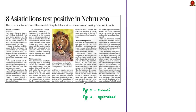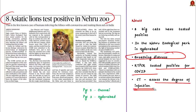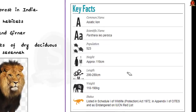The pandemic is also affecting Asiatic lions. About eight big cats tested positive for COVID-19 at Nehru Zoological Park in Hyderabad after displaying breathing distress; RT-PCR confirmed infection and CT scans will assess the degree of infection. Key facts on Asiatic lions: scientific name Panthera leo persica; population approximately 523; height about 110 cm; length 200–280 cm; weight 110–190 kg.